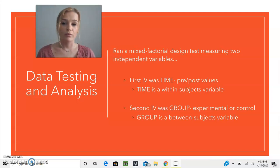My second independent variable was group, and that was measured between the experimental or the control group. Group is a between-subjects variable because different people created each group, and they did not do both the experimental and the control task.